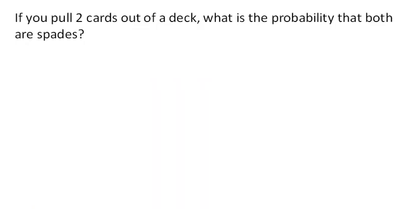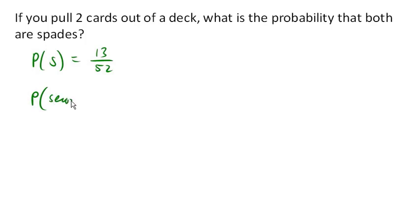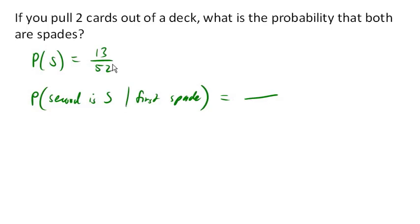Suppose you pull two cards out of the deck. What is the probability that both are spades? The probability that the first card is a spade: there are 13 spades out of 52 cards. Now what's the probability that the second card is a spade, given that the first was a spade? Given that the first one was a spade, there's one less card in the deck and one less spade, so 12 out of 51 is the probability of the second one being a spade.